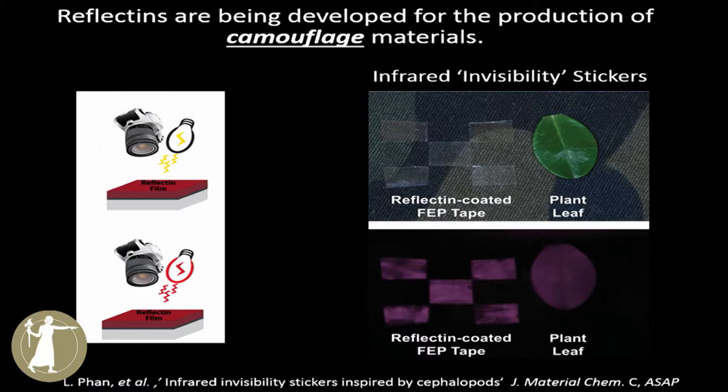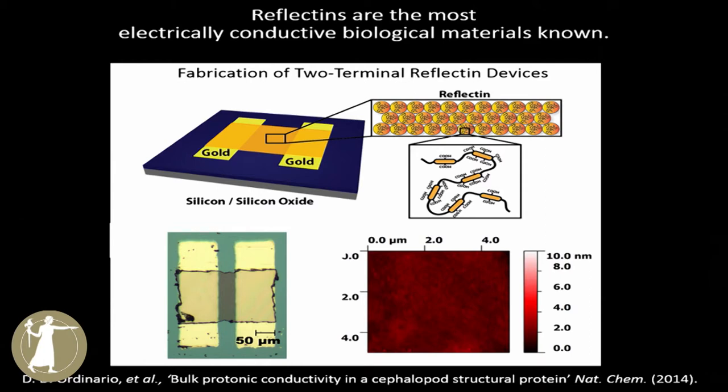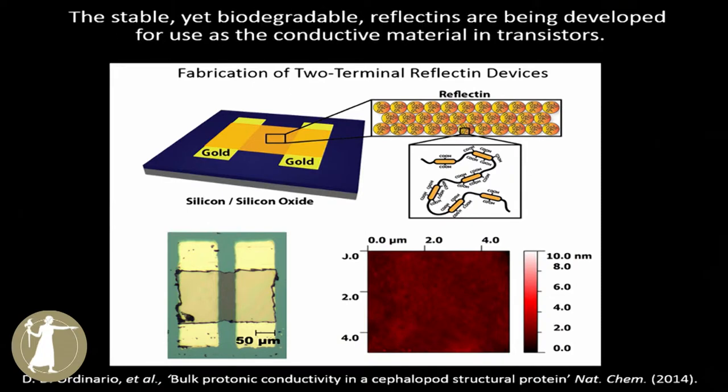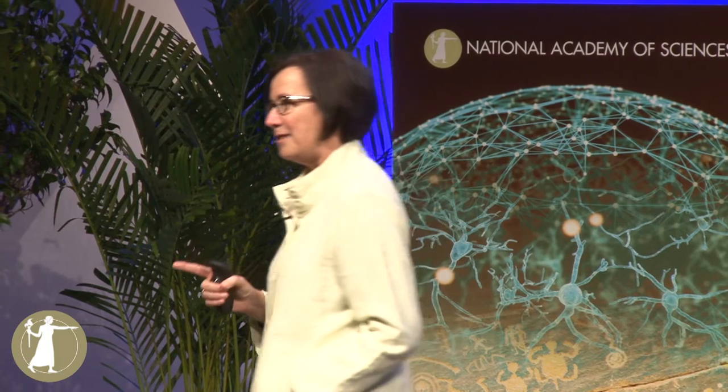Reflectins are also the most electrically conductive biological materials ever described. His lab is working on the idea — and I don't know whether this will be true, but it's certainly cool — that stable biodegradable reflectins are being developed for use as conductive material in transistors. This fourth-year assistant professor says to me that in five years, he thinks all transistors, instead of being cadmium-based with toxic heavy metals, will be based on reflectins. We'll see, but this kid has great dreams and it's really fun.